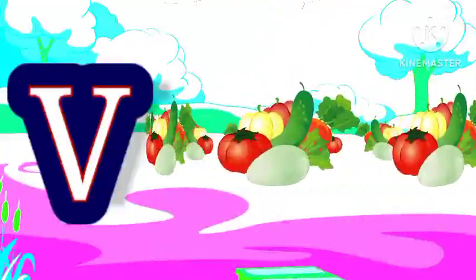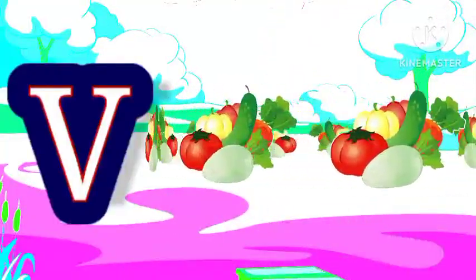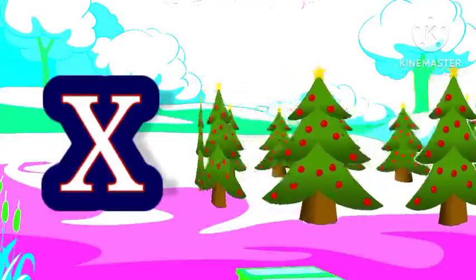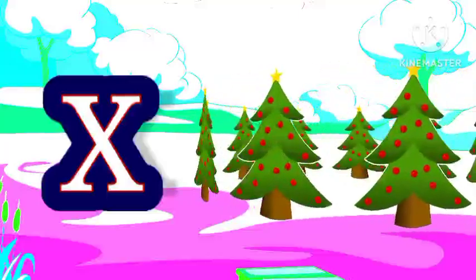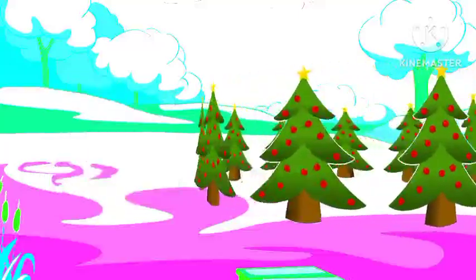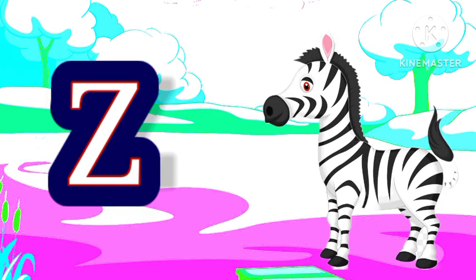V for vegetables, W for watermelon, X for egg mastery, Y for yacht, Z for zebra.